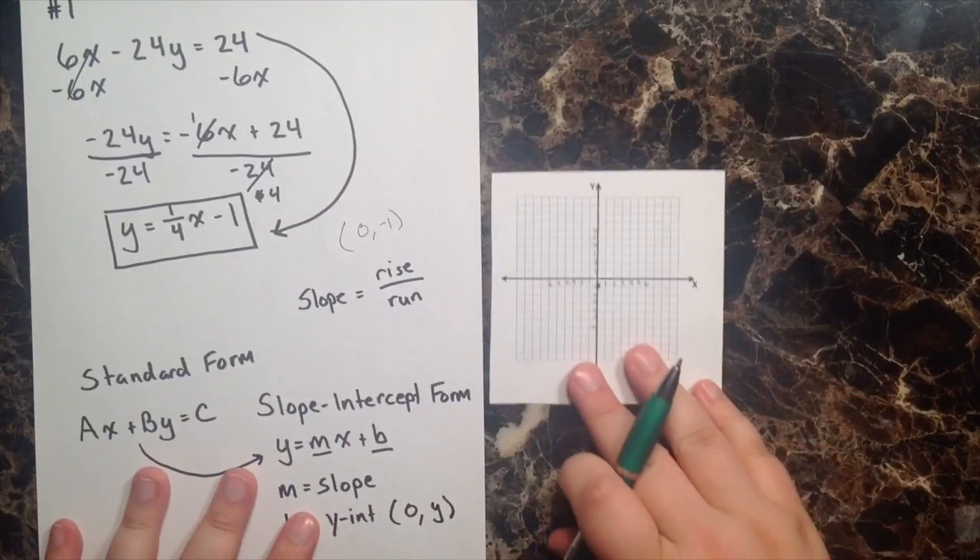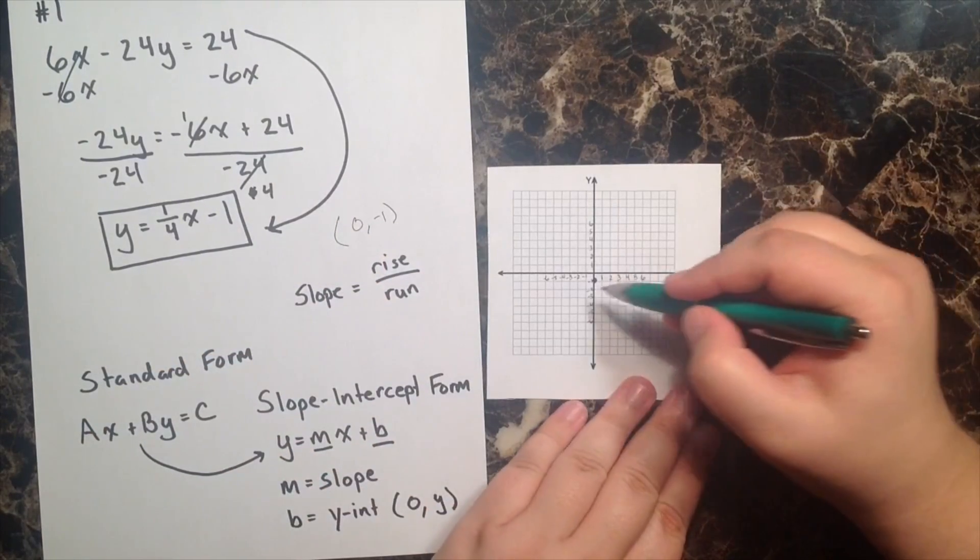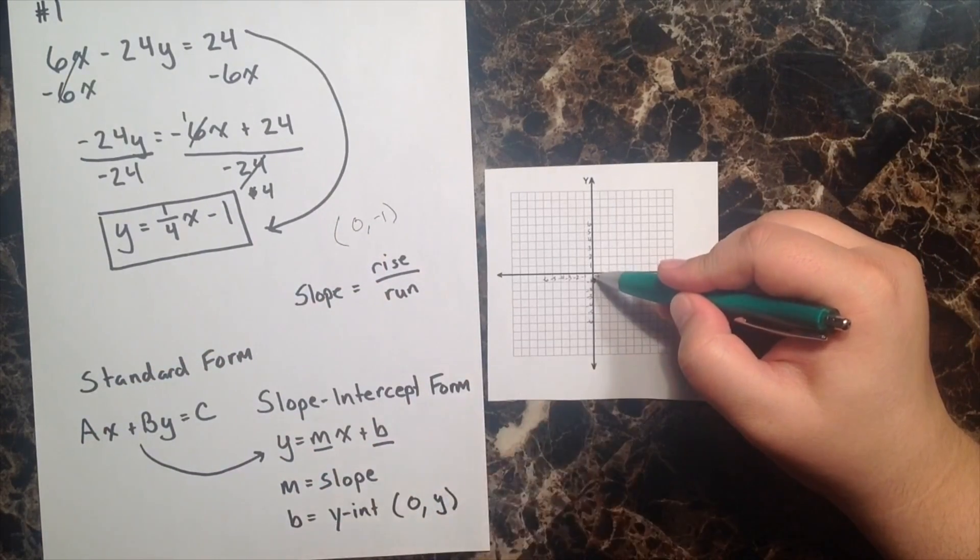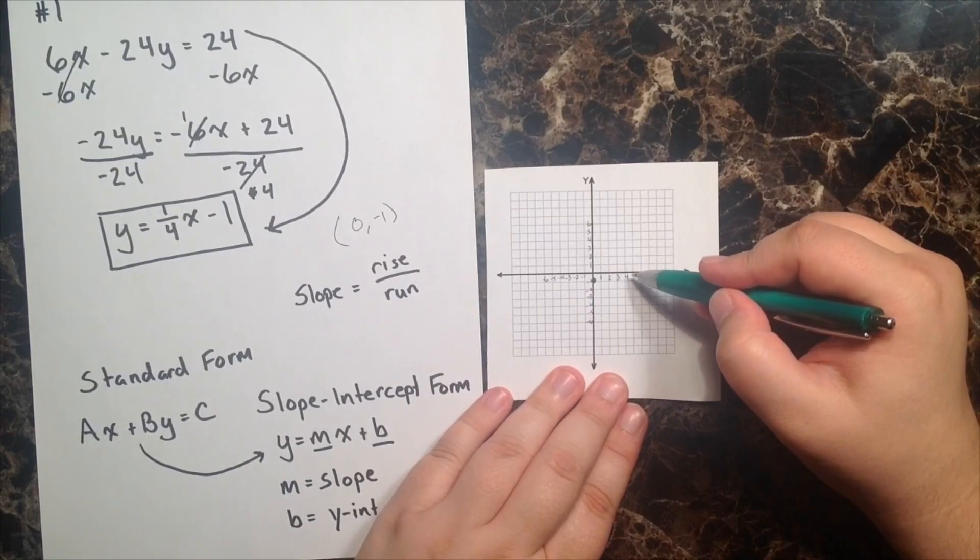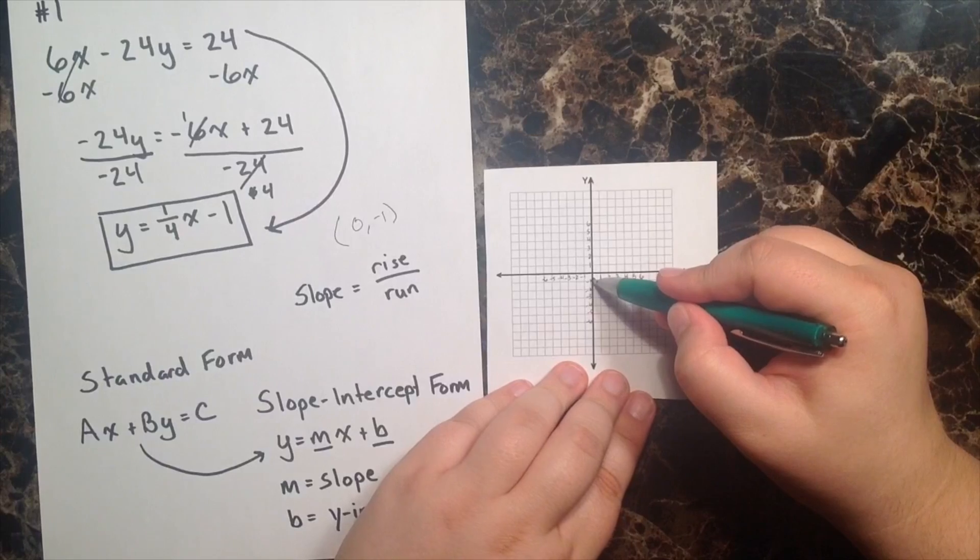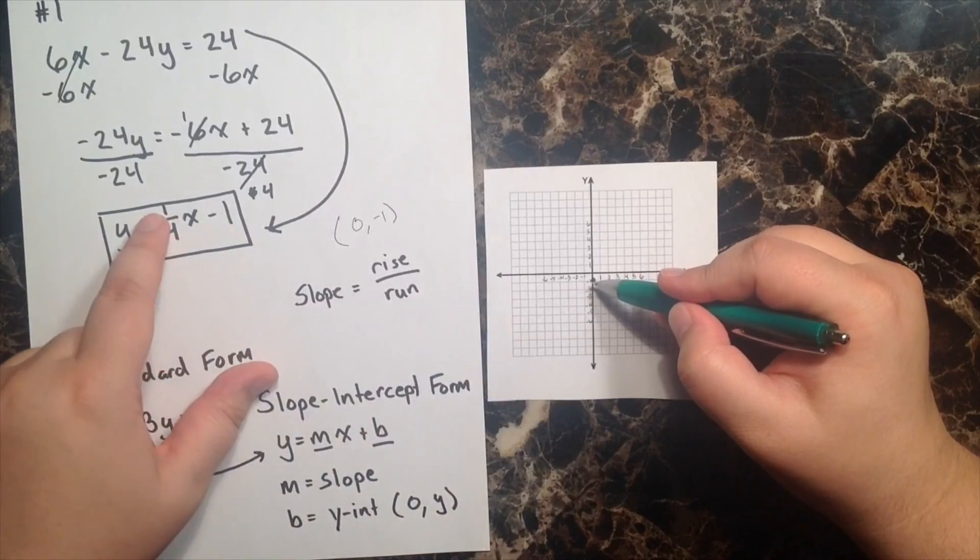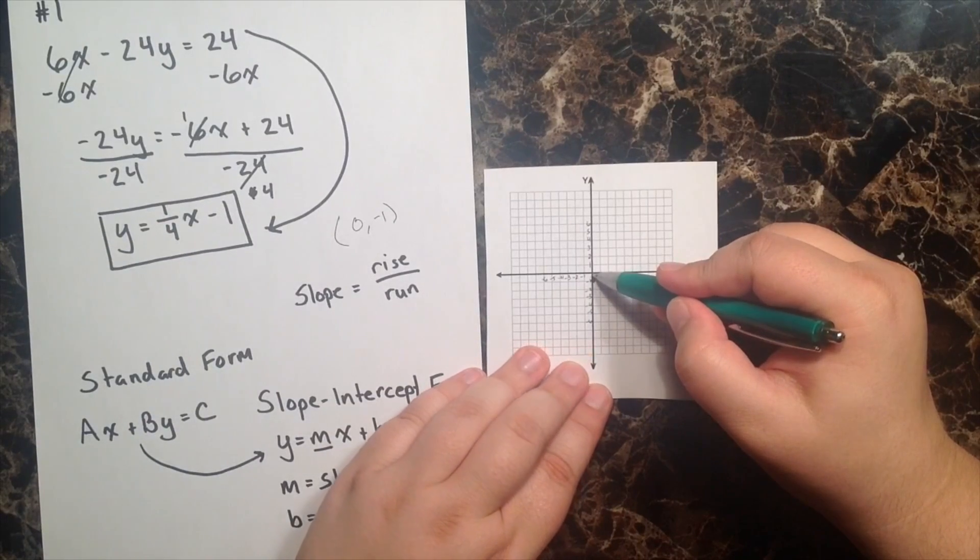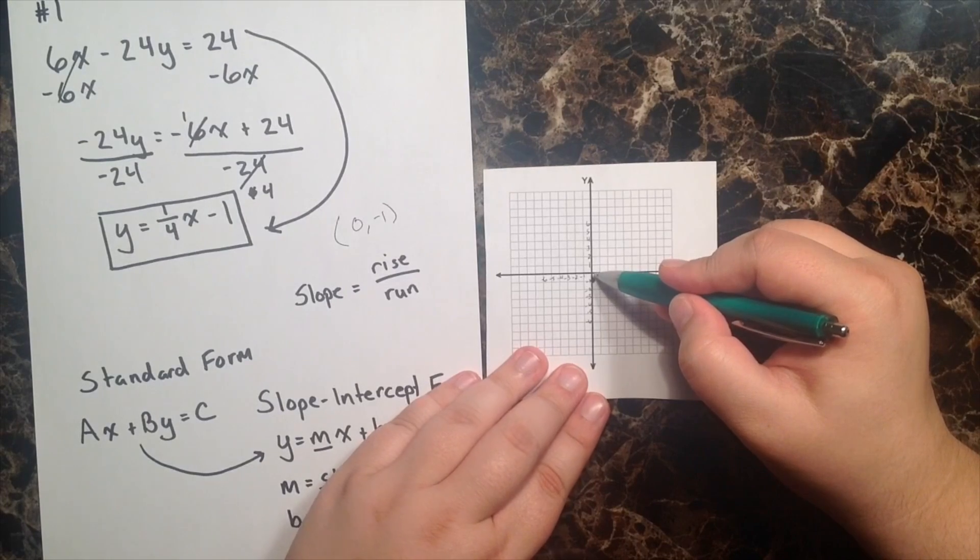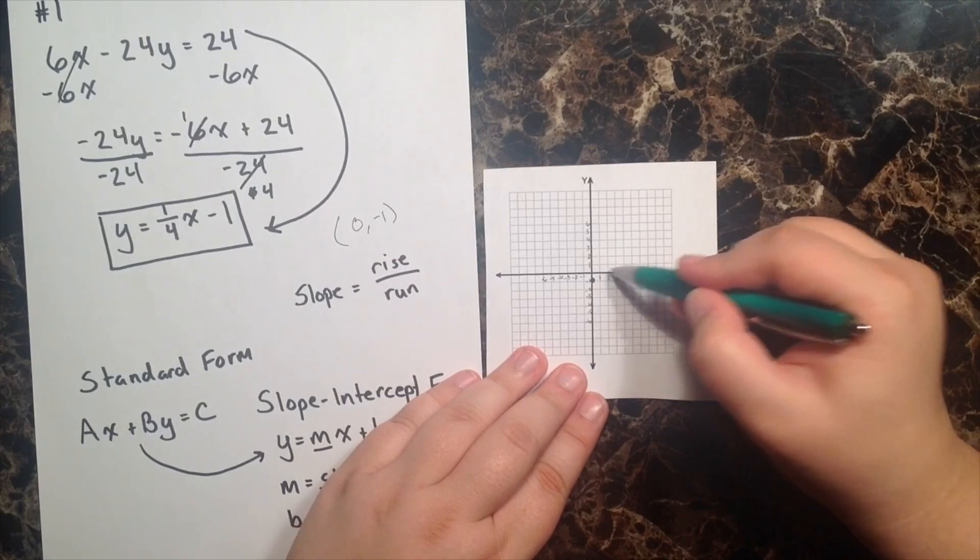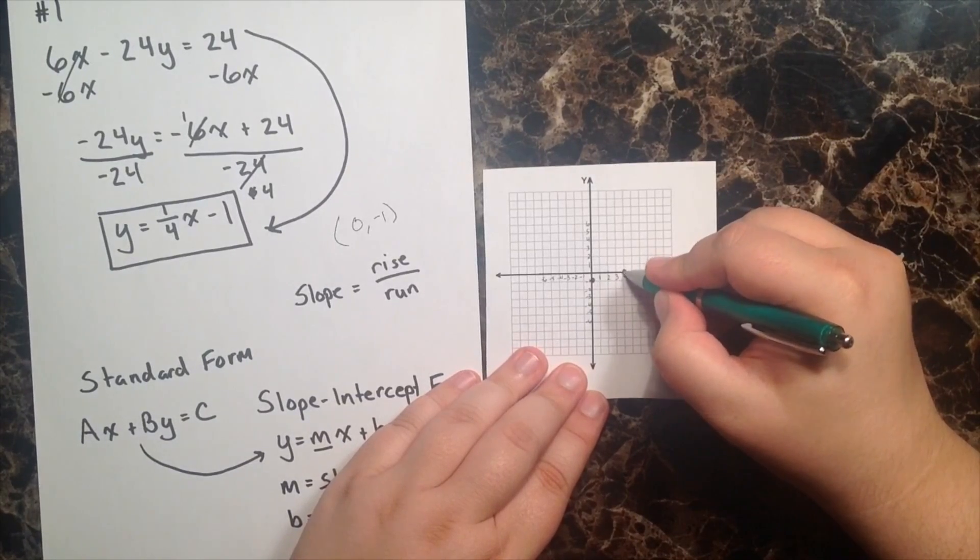And we might remember that slope is the same as rise over run. Well, if my slope is 1 over 4, and it's rise over run, I know that means I'm going to rise 1 unit and run positive 4 units. Let's go ahead and do that. I start at my y-intercept, which was negative 1. I'm going to go up 1 unit, back to 0, or my origin. And then I'm going to run in the positive direction 4 units. 1, 2, 3, and 4. And plot my point.